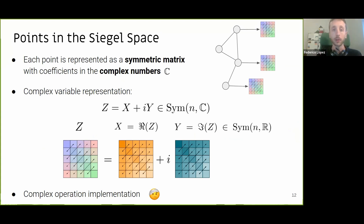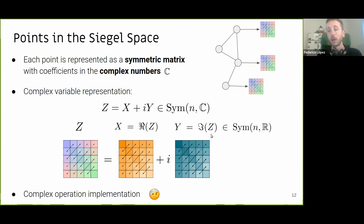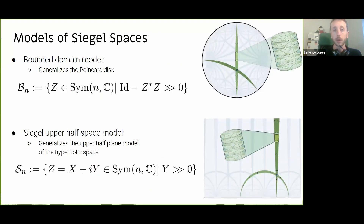The way we represent points in Siegel Spaces is not by using vectors. For each node in the graph, instead of having one vector embedding, we will have one matrix — in particular a complex symmetric matrix, meaning it is symmetric and has real and imaginary components. By the time we implemented this work, PyTorch was not super mature yet with complex operations, so we had to implement many operations on our own. The two models we use from Siegel Spaces are the bounded domain model, which is a generalization of the Poincaré disk, and the Siegel upper half space model, a generalization of the upper half plane model of hyperbolic space.